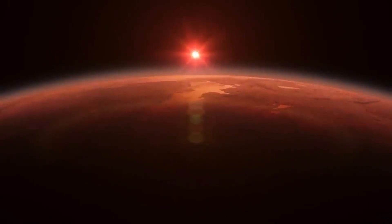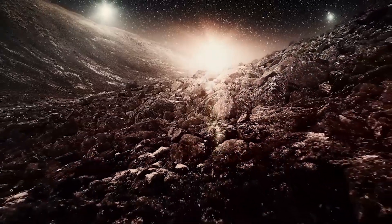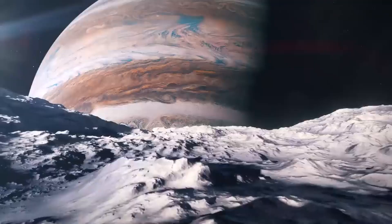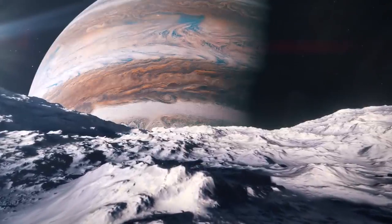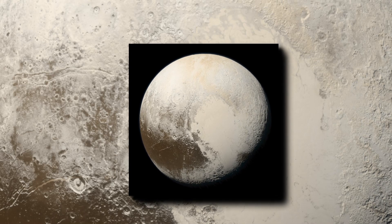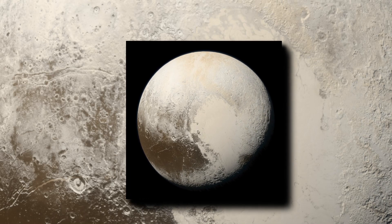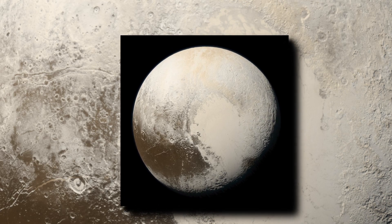Imagine a remote enigmatic location that has long piqued the interest of both scientists and the general public. A world that was once thought of as a planet but was later downgraded, causing great debate and controversy. Its name is Pluto. But today, we are finally getting a closer look at this fascinating celestial object, thanks to the cutting-edge tools of the James Webb Space Telescope.